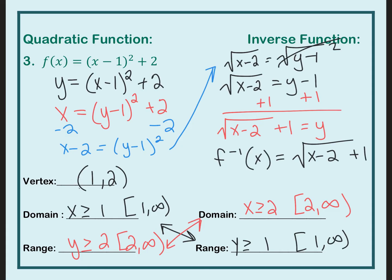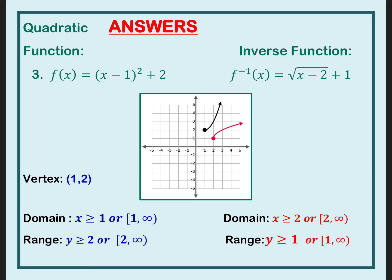Now looking at the graph, we can see this is a reflection — the whole point of the inverse is that it is a reflection over the line y equals x. It did mirror over that line. The vertex we restricted was right here, so we said x is greater than or equal to 1, meaning my domain starts at 1 and goes to infinity. Looking at the red inverse graph, the range starts at 1 and goes up to infinity. Restricting the domain ensures the inverse is a function and creates a true reflection over y equals x.